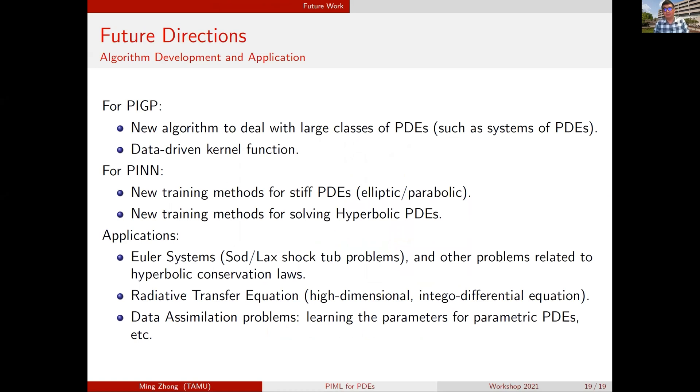That comes to my conclusion. For future work, for the Gaussian process, as I mentioned, we have to finish the algorithm so that the algorithm can deal with larger classes of PDEs, such as the system PDEs. We also want to find a way to give us the kernel function from the data, so that we don't need to worry about picking the correct kernel function. For the PINNs, we're still looking at how to add more training methods or other properties to PINN so that it can solve stiff PDEs and especially the hyperbolic PDEs. We're still looking at applying PINN to solve other systems. We're working a little bit in the radiative transfer equations. We have some demo code ready. For the inverse problem, I haven't shown any example of that, but we are still working on this. That's it. Questions?